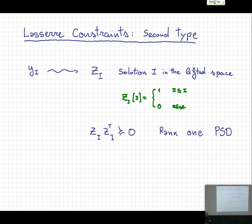This vector z_I is the integral solution in the lifted space. Formally, it's a zero-one vector indexed by subsets: if set J is contained in I, this entry equals one; otherwise it's zero. This is the integral solution in the lifted space.